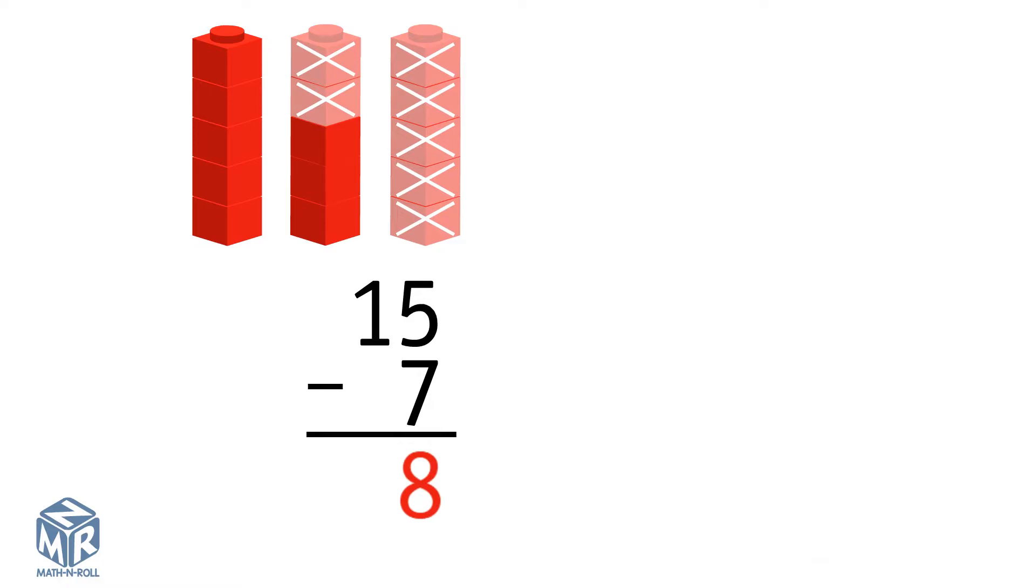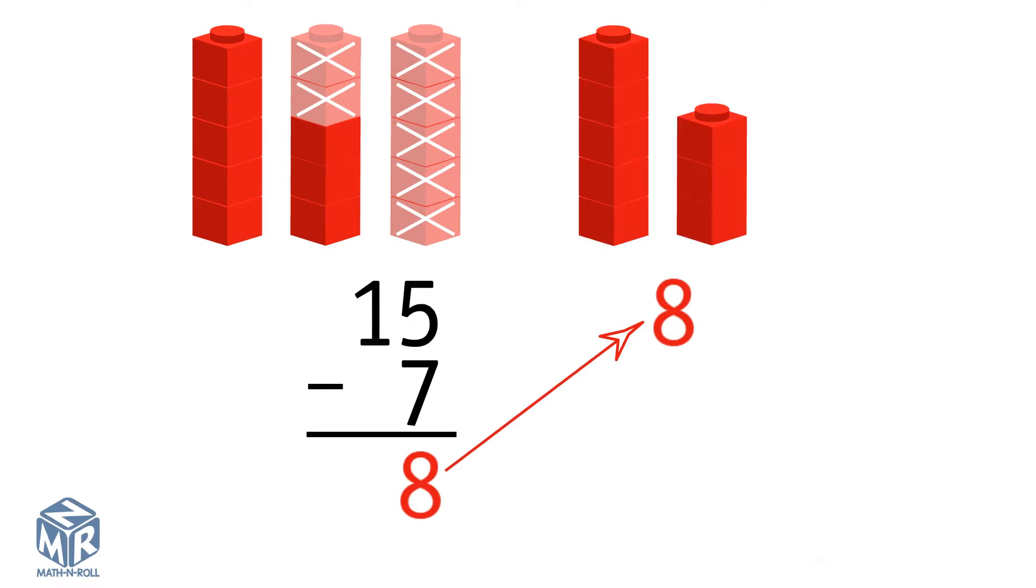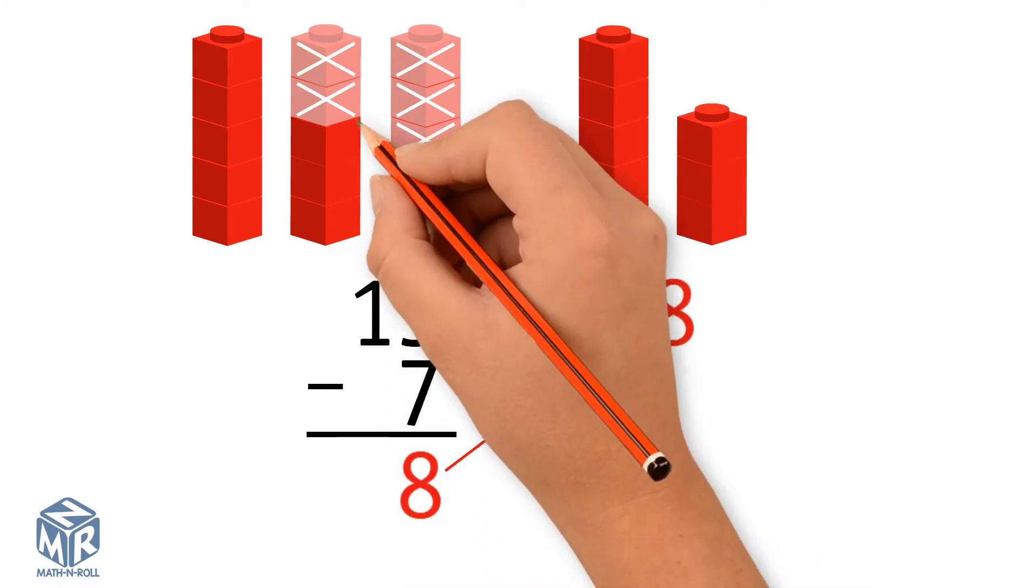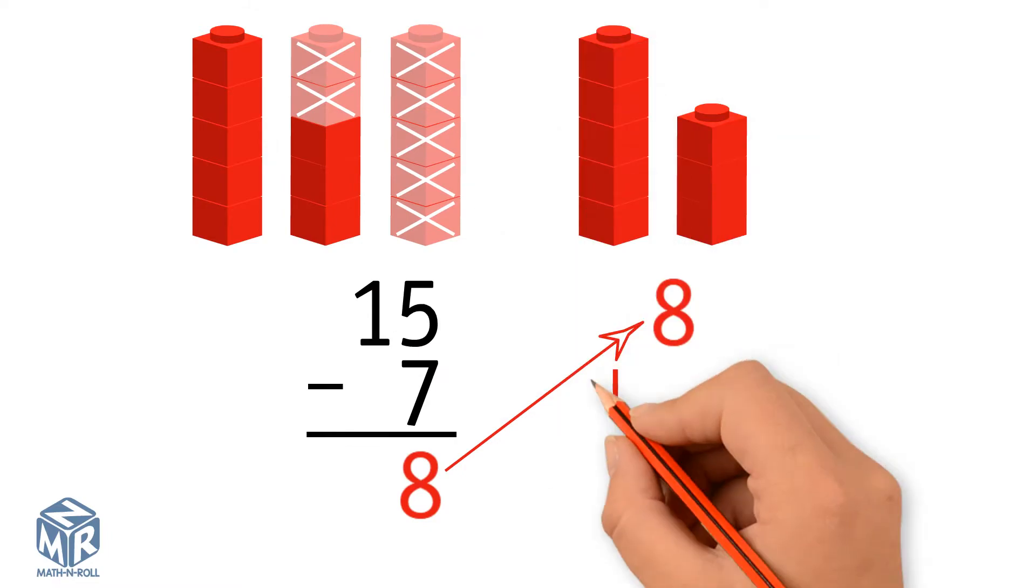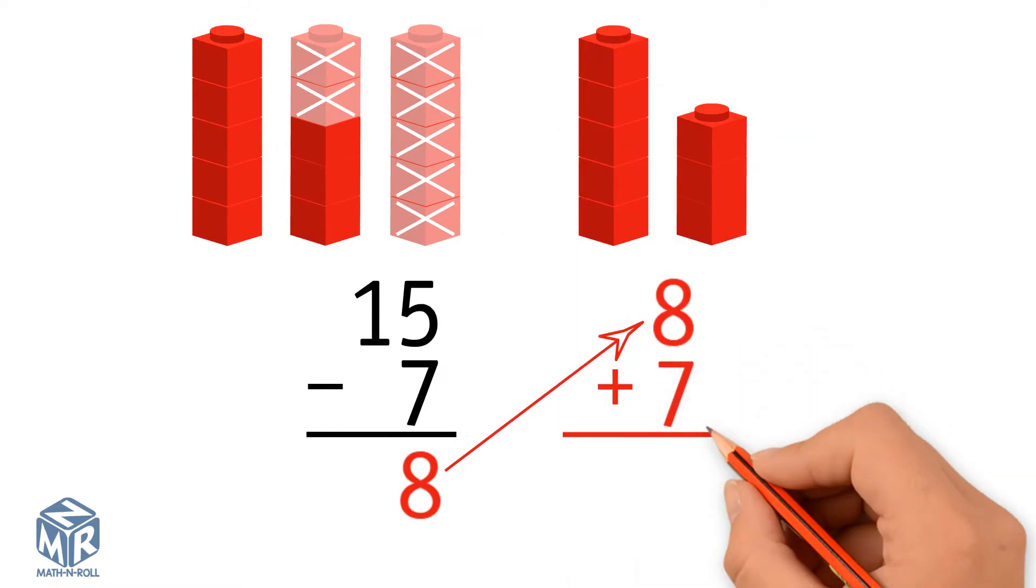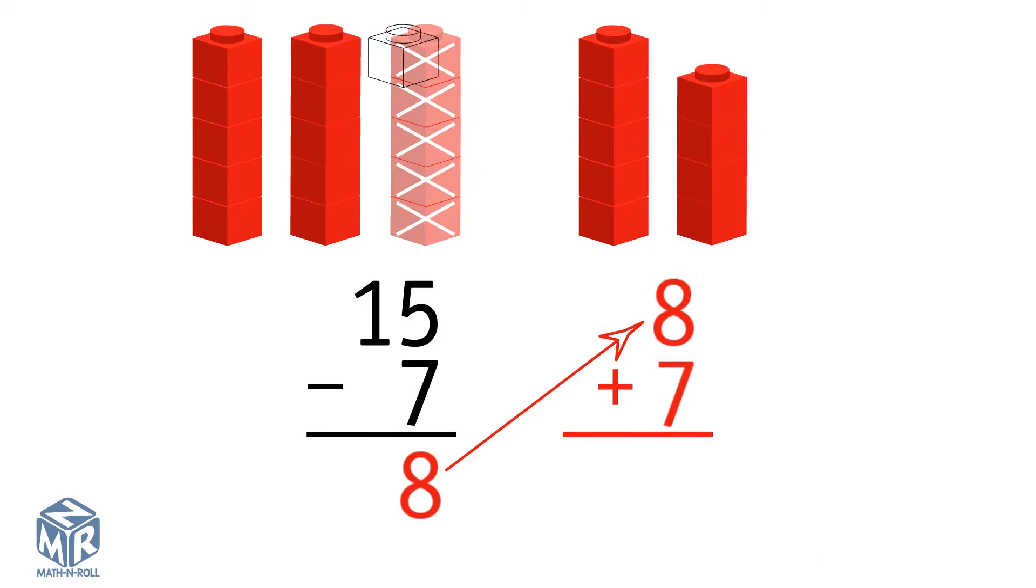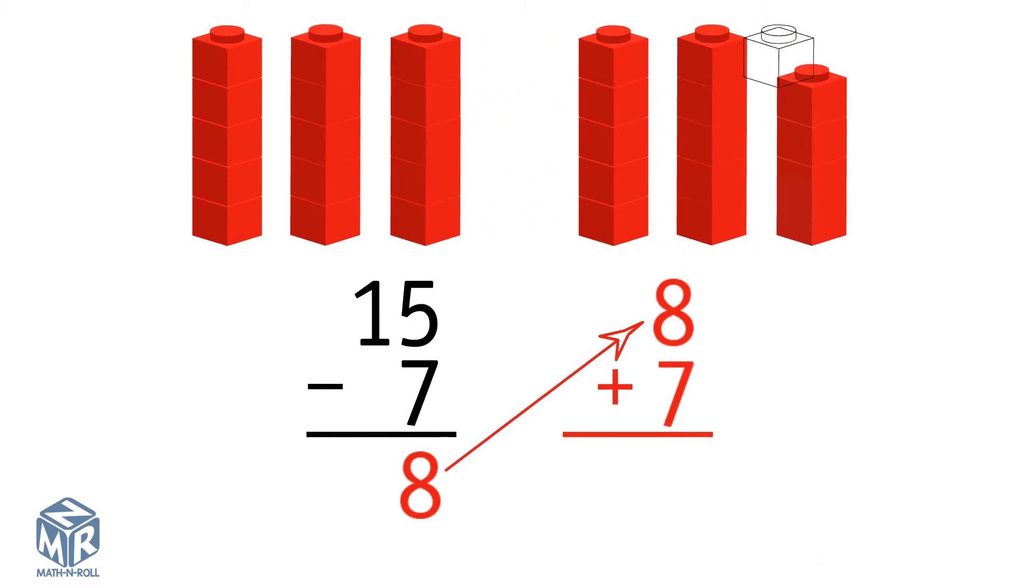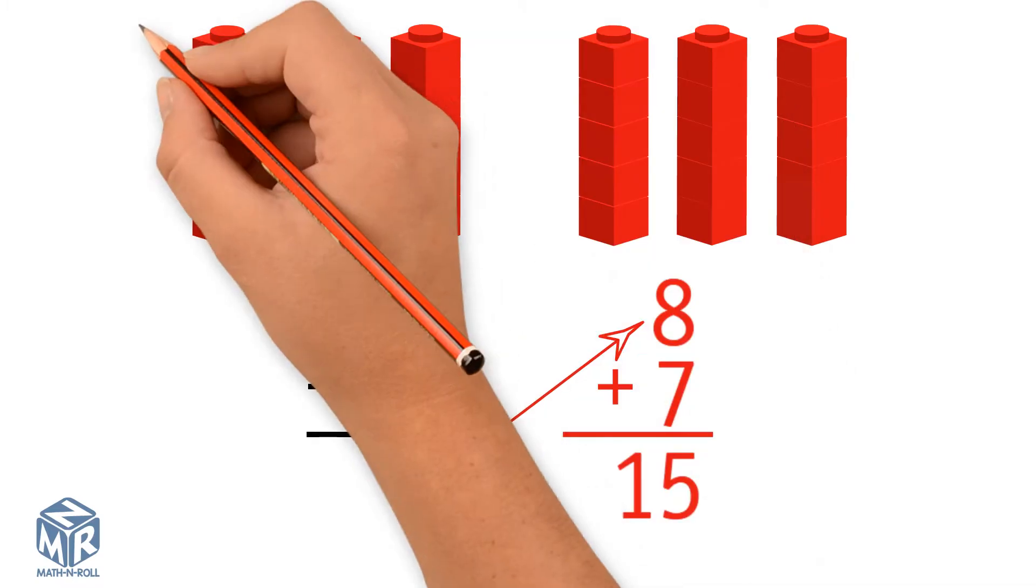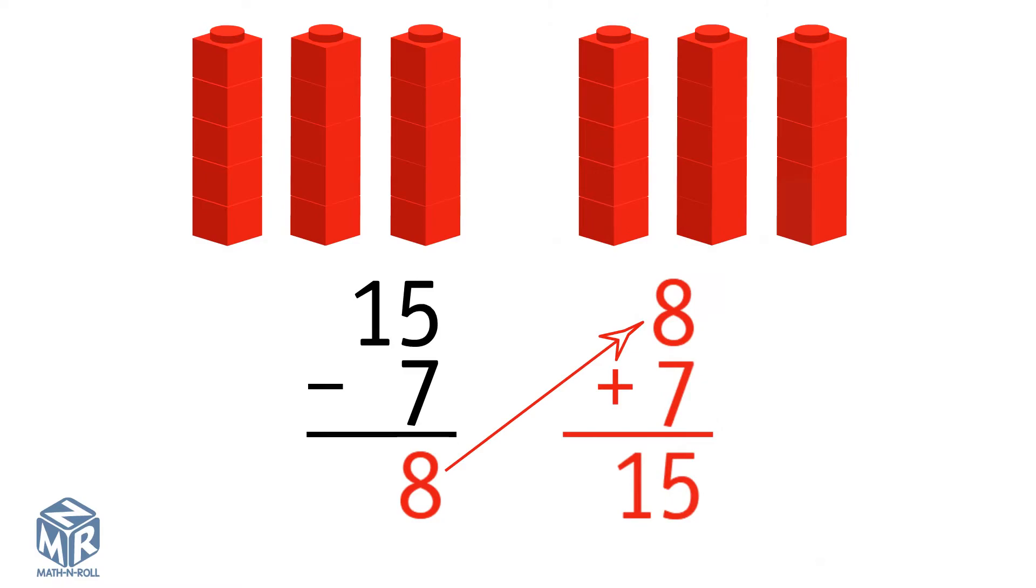Now let's check the subtraction using addition. Add the parts. We have 8 cubes, and we want to add 7 more cubes. Now we have 15 cubes. 15 equals 15, so our subtraction was correct.